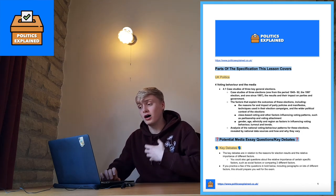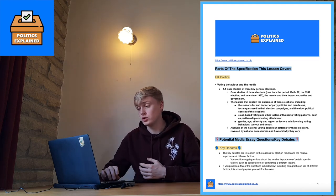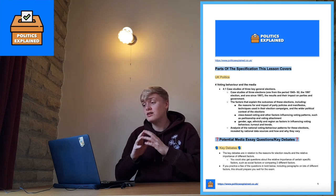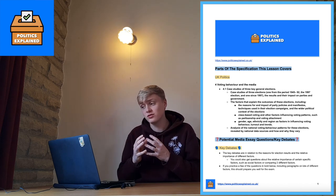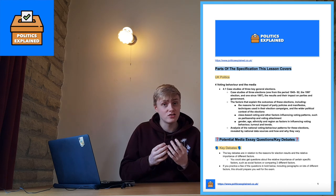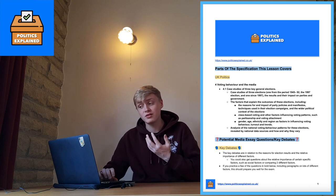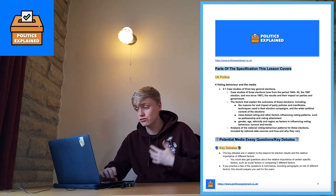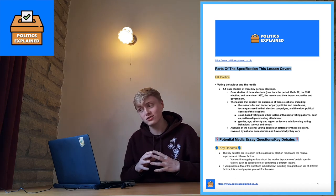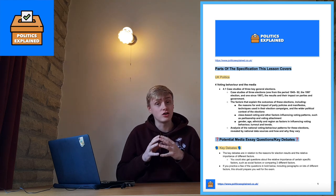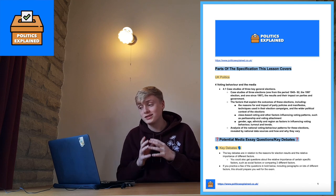I'm going to start by looking at the parts of the specification this lesson covers. From there I'm going to go on to the key potential essay questions and key debates you could get asked. I'm then going to look at key factors explaining the outcome of elections — traditional determinants of voting behaviour such as class, social status, and partisanship, and how they've decreased with class de-alignment and partisan de-alignment. From there I'll look at social or demographic factors: age, region, class, education, ethnicity and gender. Then long-term issue factors such as rational choice, issue-based voting, valence factors, and the wider political and social context.